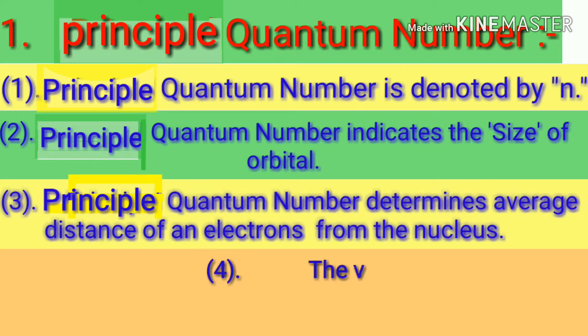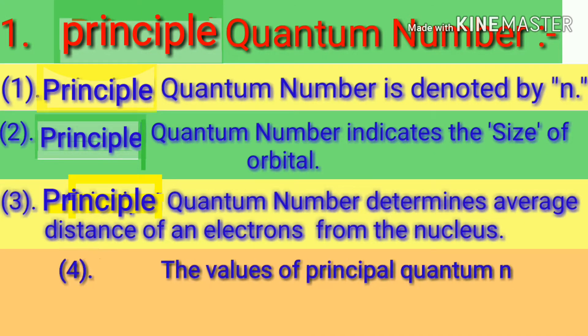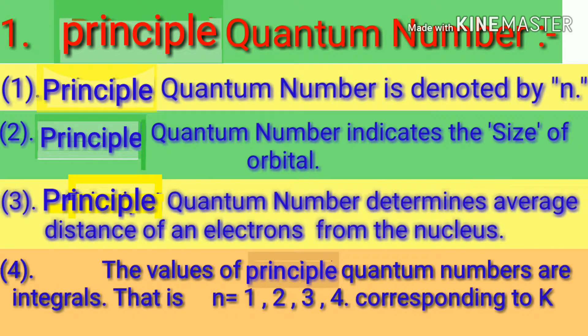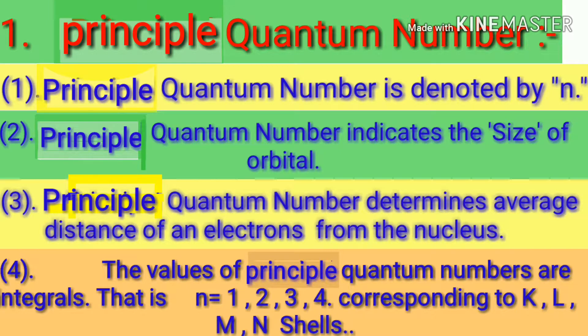The values of principal quantum numbers are integers: N equals 1, 2, 3, 4, corresponding to K, L, M, N shells.